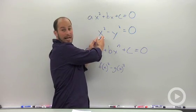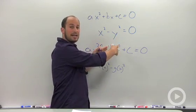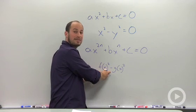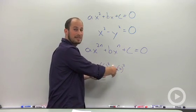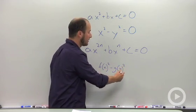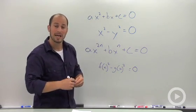This is factored like x plus y times x minus y. We can do the exact same thing here: f of x minus g of x times f of x plus g of x equals 0.